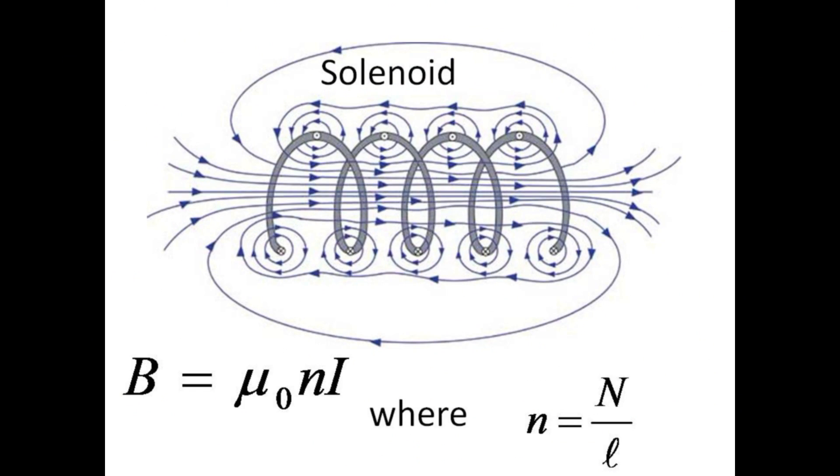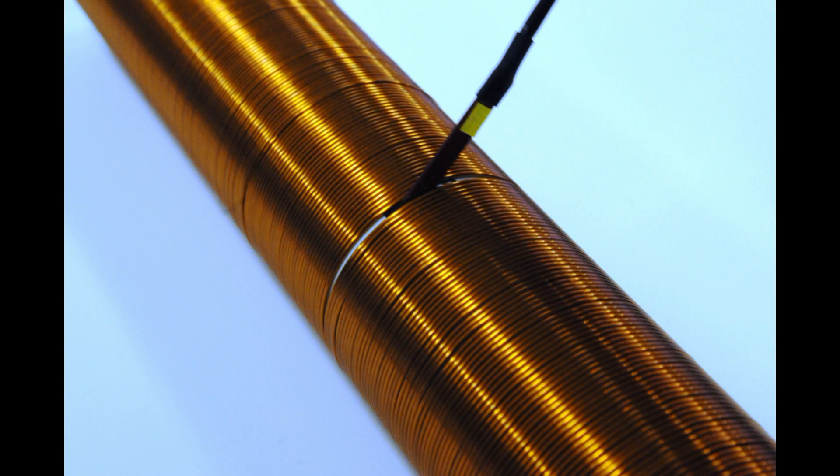A solenoid is a helical coil with a strong uniform magnetic field through the center with a strength given by mu0 times n times i, where little n here is the number of turns per unit length. Insert the probe in the slot such that the B-field pierces the flat surface and then turn on the current.